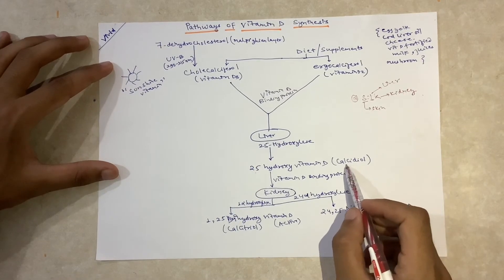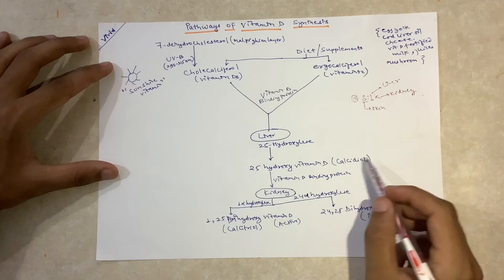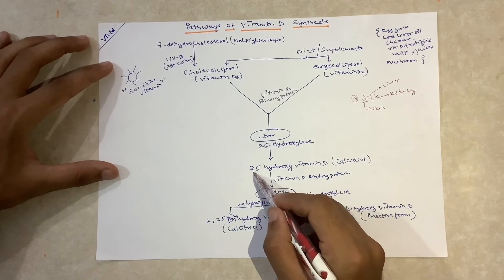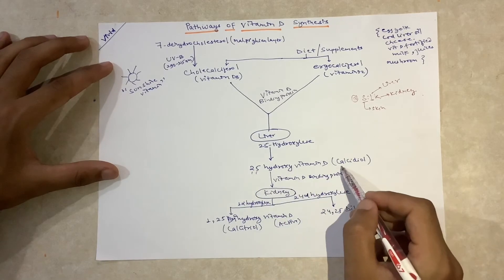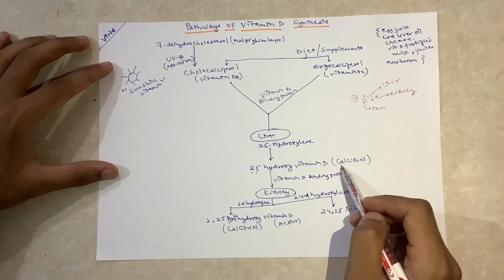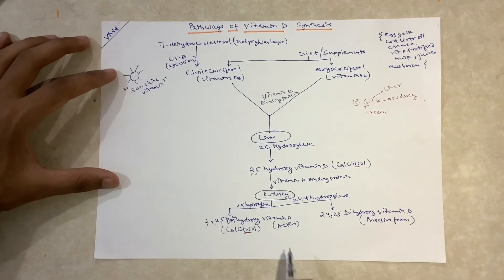To remember which is calcidiol and calcitriol, I remember by counting numbers. As there are two numbers, 2 and 5, it is calcidiol. If there are three numbers like 1, 2, and 5, it is calcitriol.